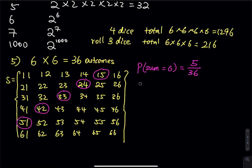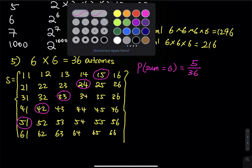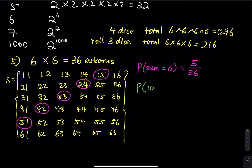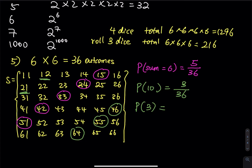Let's try a few more. The probability of getting a sum of 10: you need four plus six, five plus five, or six plus four — that is 3 out of 36. For a sum of three: one plus two or two plus one — that is 2 out of 36. For a sum of 12: only six plus six — that is 1 out of 36. That's how sample space and events work in probability. In the next video, I will introduce complementary events. If you find my instruction helpful, please like, subscribe, and share the video. I'll see you in the next video.